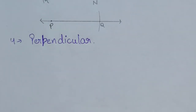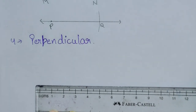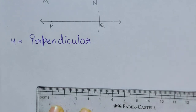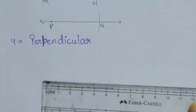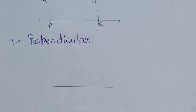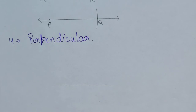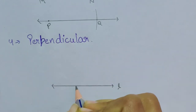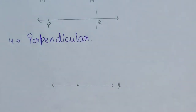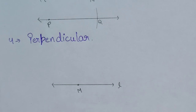The next topic is how to draw a perpendicular using compass and ruler. First, draw a line using ruler and pencil. Name the line L. Suppose we have to draw a perpendicular from a specific point on the line — name that point M.